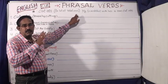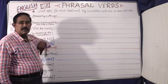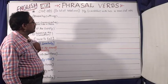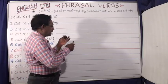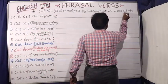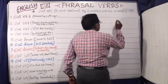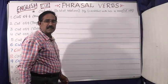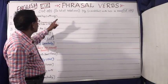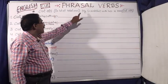The meaning of 'cut off' is to stop relations. My friendship with her is now cut off. This means to stop the relationship — that is the sense of 'cut off': to stop relations.